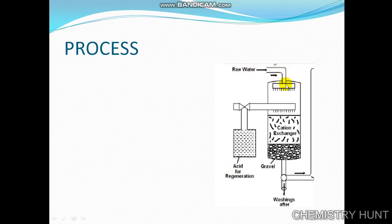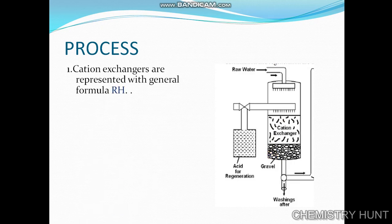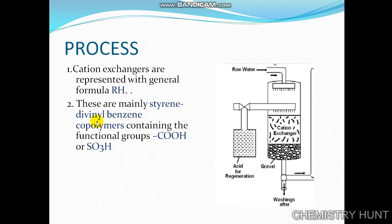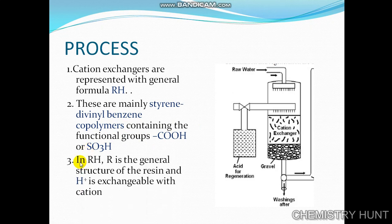This diagram is just for understanding and not to be drawn. The raw water is passed into the cation exchanger where all the cations are retained and it gives an equivalent amount of hydrogen ions. Cation exchangers are represented with the general formula RH. These are mainly styrene-divinyl benzene copolymer containing the functional group carboxylation or sulfonation. In RH, R is the general structure of the resin — the styrene-divinyl benzene copolymer — and hydrogen ion is the exchangeable cation.